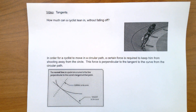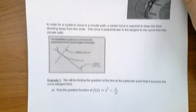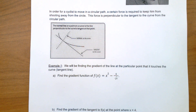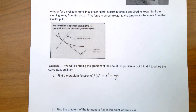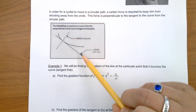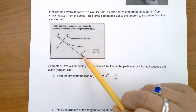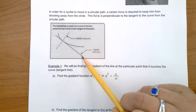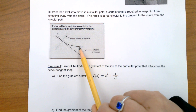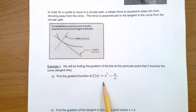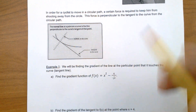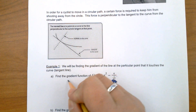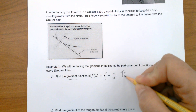What are we going to be doing with this? Example one. We're going to be finding the gradient of the line at the particular point that it touches the curve, which is the tangent line. So we're going to first be finding this gradient — finding this line that touches this curve. Here is our curve. When they ask you to find the gradient, you're going to take the derivative.